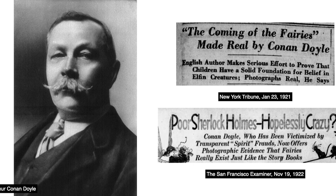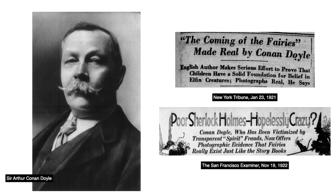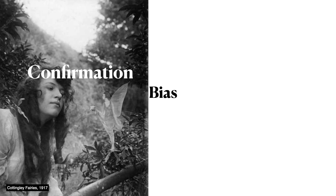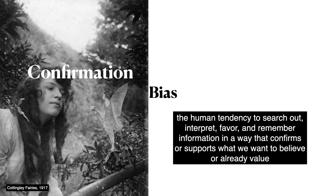For decades, the girls maintained that the photographs were real. So how do people believe things that are so silly? In large part, it's because of something called confirmation bias — the human tendency to search out, interpret, favor, and remember information in a way that confirms or supports what we want to believe or what we already value. People tend to unconsciously select information that supports their views but ignore information that contradicts what they already believe. Similarly, we won't want to search out information that proves our beliefs aren't true. So Sir Arthur Conan Doyle wanted to believe the fairies existed, and when he saw a photograph that proved it, he used it as confirmation for something he already wanted to believe.